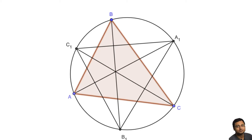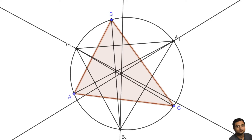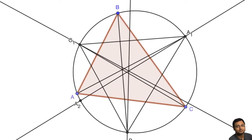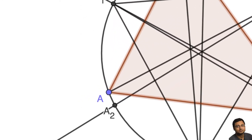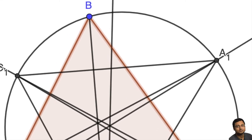Now, let's repeat the process. That is, we will draw the angle bisector of angle B1, the angle bisector of angle A1, and the angle bisector of angle C1. Suppose they meet the circle at A2, B2, and C2 respectively.